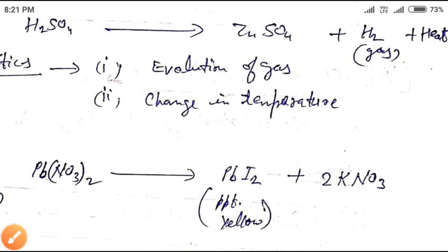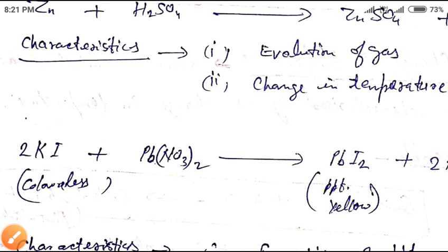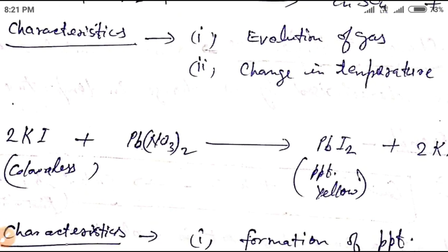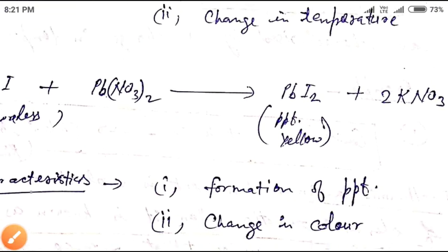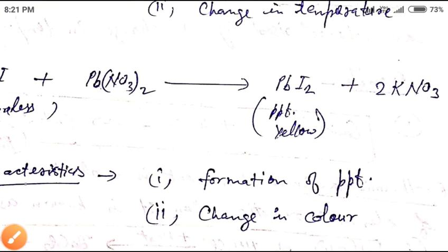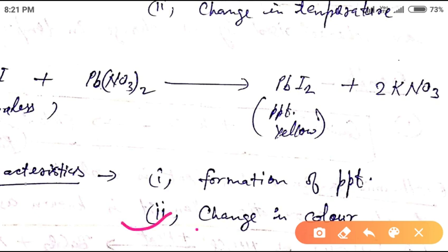This reaction is also characterized by two observable features. The first observable feature is the formation of a precipitate — lead iodide is formed as a precipitate. The second observable feature is a change in color.